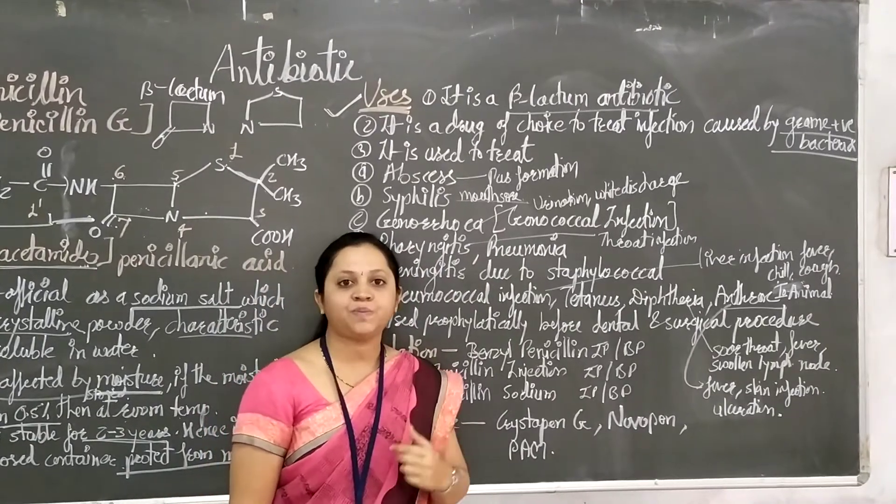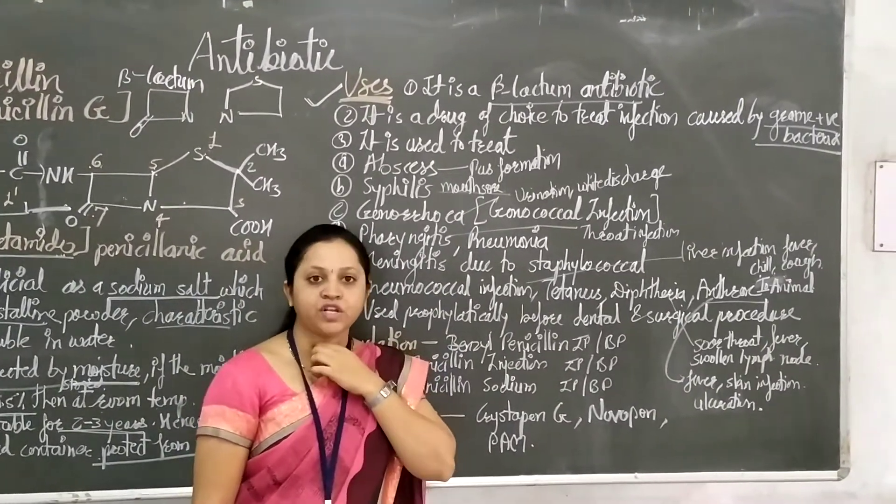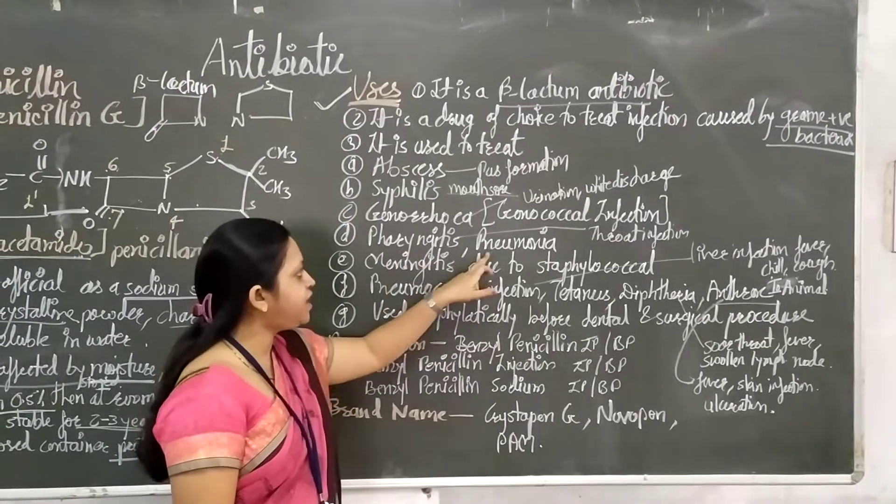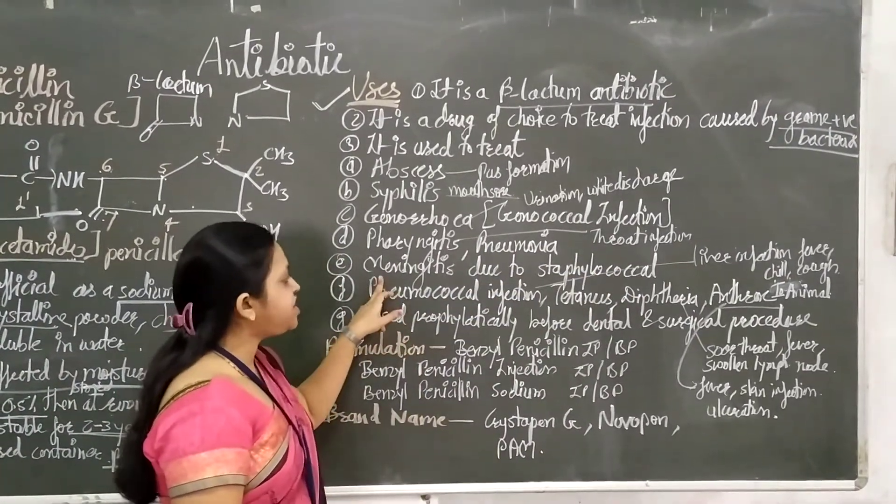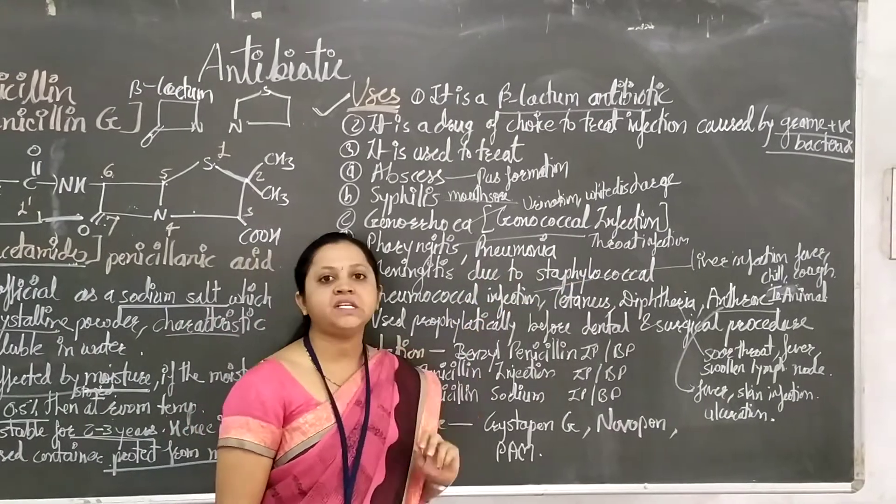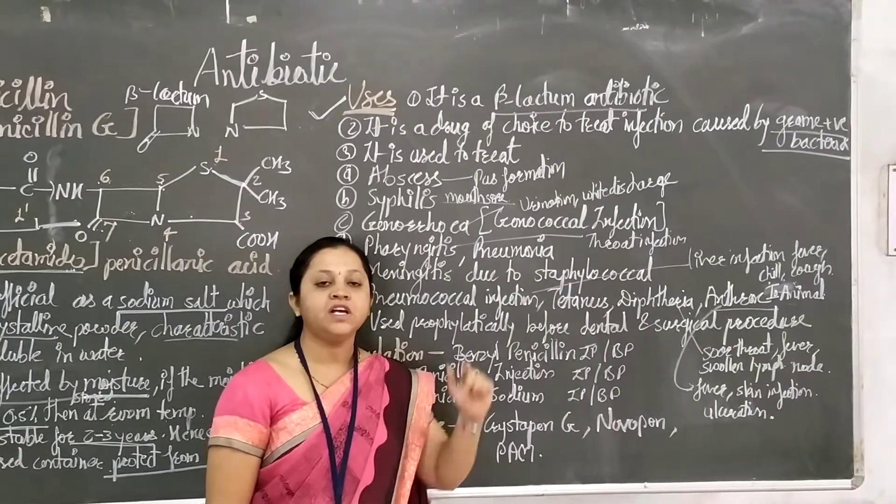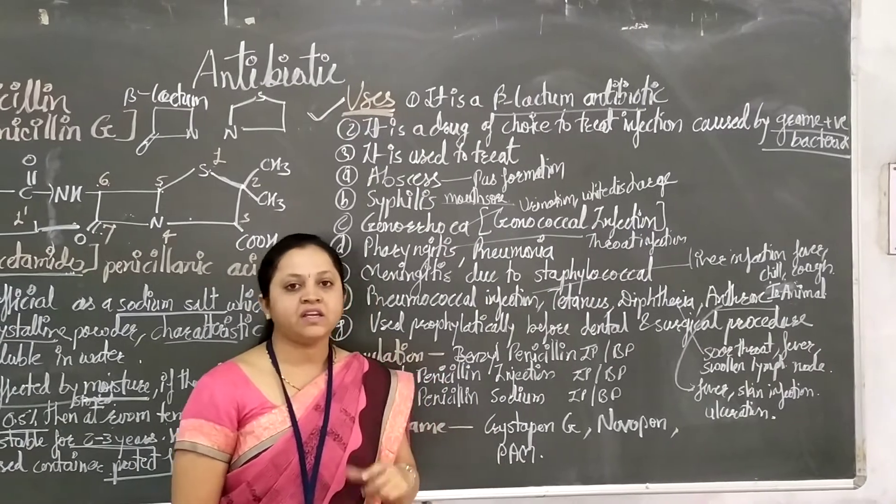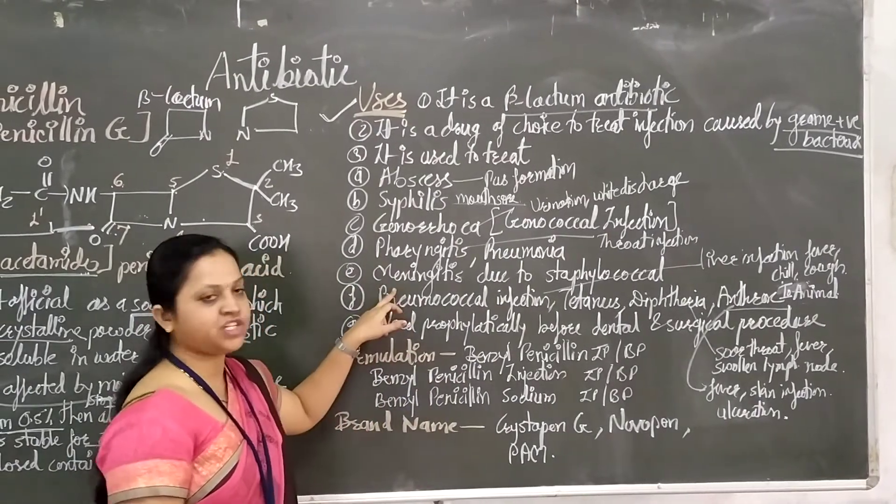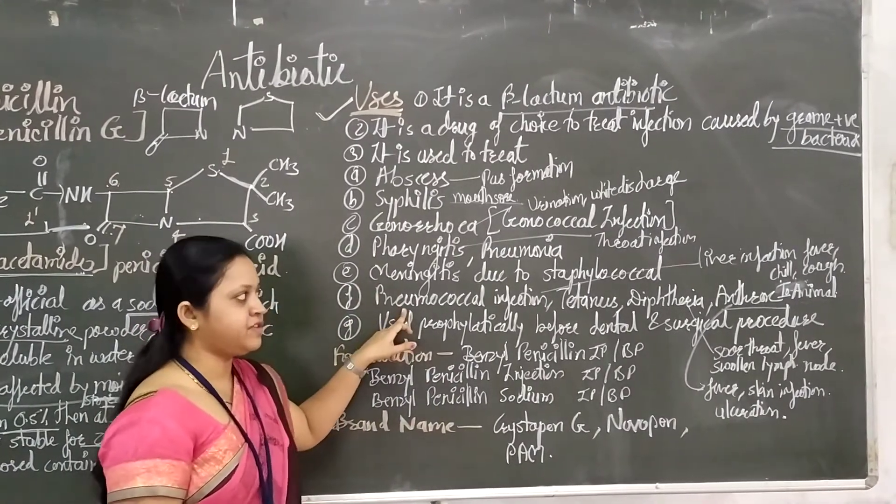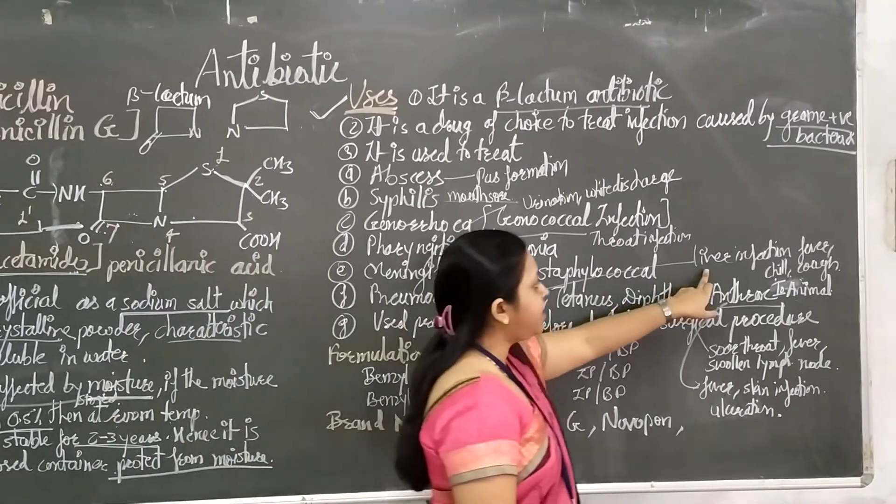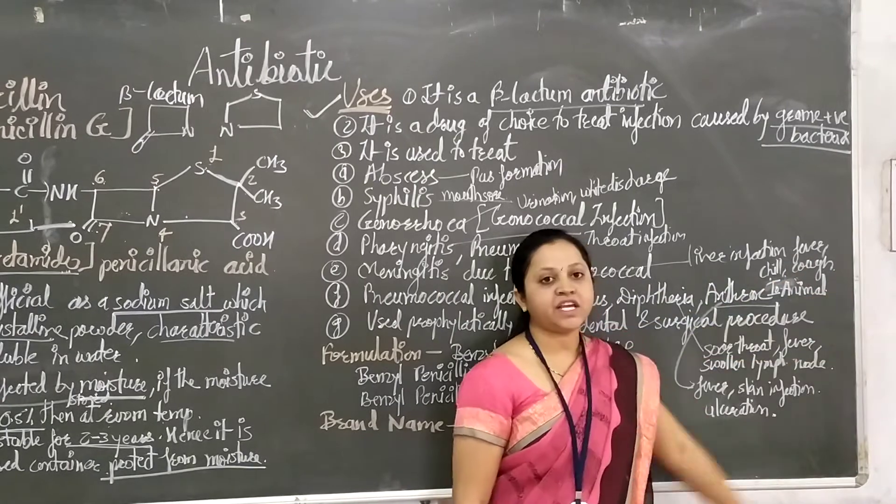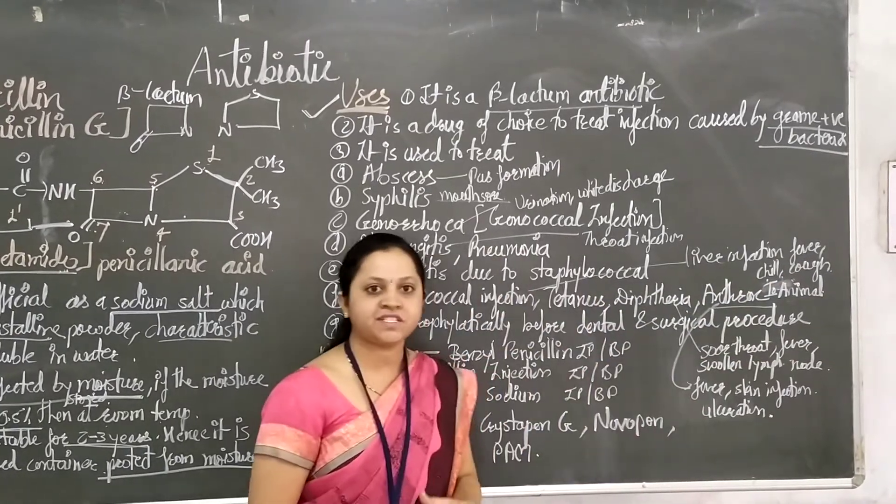Next is pharyngitis and pneumonia. You know these are related to respiratory infections - nose running, throat infection. That is pharyngitis and pneumonia - throat infections are covered. Next is meningitis - a cerebral infection where the cerebral gray matter swells. Next, pneumococcal infection - a liver infection with fever, chilling effect, and cough-like symptoms.